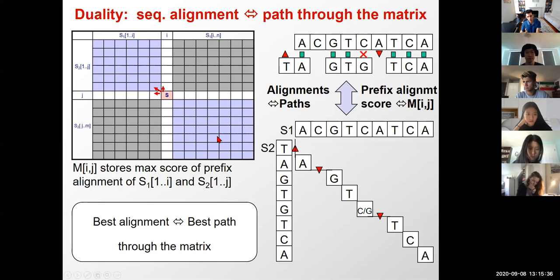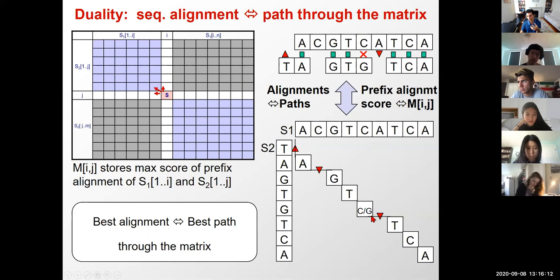We save the choices made during computation of every locally optimal score and reuse them in constructing the globally optimal solution in the traceback step. There's a beautiful duality between scores in the matrix — maximum scores of prefix alignments — and paths through the matrix, which correspond to all possible alignments. There is an exponential number of possible paths, effectively three to the n ways of traversing the matrix.